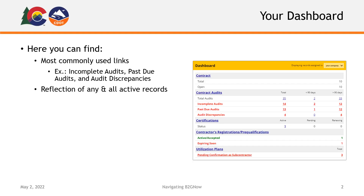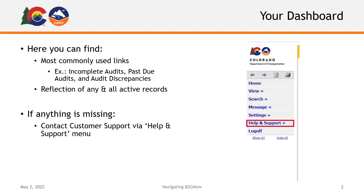Once you are logged into B2GNOW, you will see your B2GNOW homepage. This is where you will find your system dashboard and can navigate the rest of the B2GNOW system. Your dashboard may vary slightly based on your settings and projects, but this is where you will find your most commonly used links. Here, you will find a reflection of any and all active records pertaining to your organization. If you notice any information missing from your dashboard, please reach out to customer support via the help and support menu on the left-hand side of your screen.